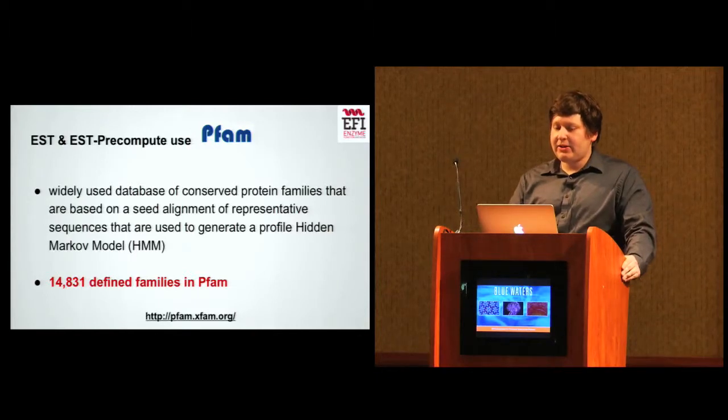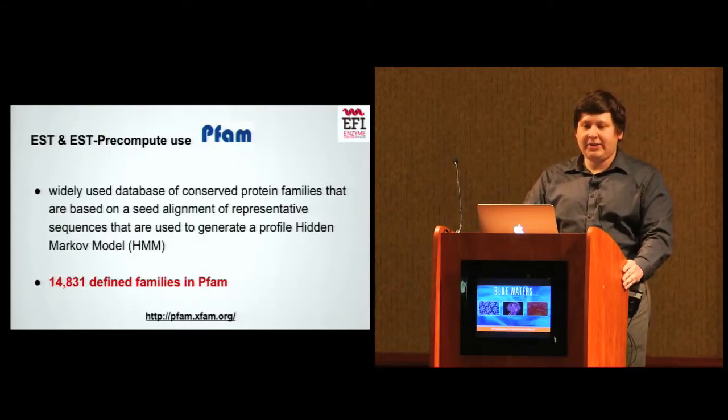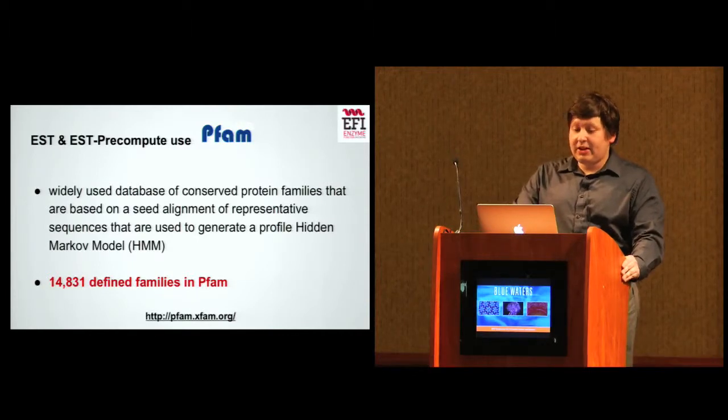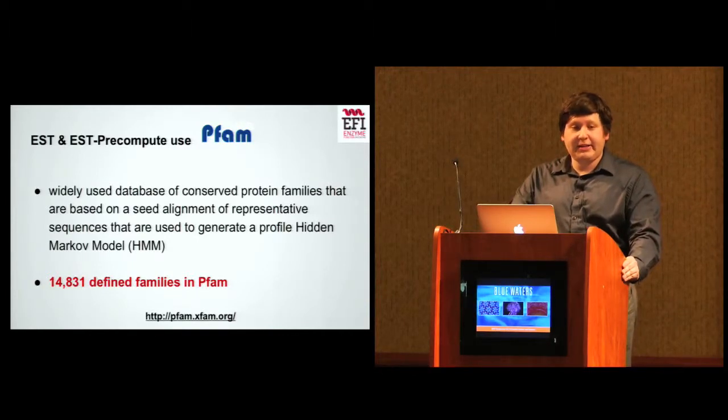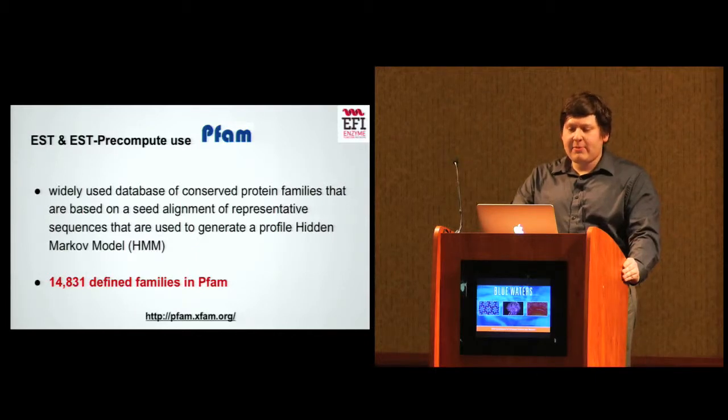Our enzyme similarity tools use the PFAM database, which is a widely used database around the world of conserved protein families that are based on a seed alignment of representative sequences, and they're used to generate a profile hidden Markov model. There are 14,831 families that are defined. You can visit them at pfam.xfam.org. As a recent development, our work with sequence similarity networks have caused these PFAM families to change. We've collaborated with PFAM to increase the accuracy of these PFAMs for the next update. PFAM covers over 80% of the proteins in UniProt, of the universal protein resource. It's really good coverage.